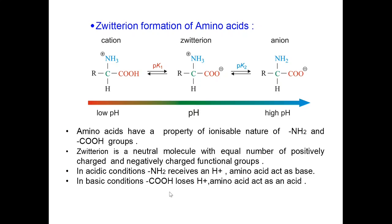In basic conditions, when high pH is there, the carboxyl loses hydrogen ion and it behaves as an acid and becomes an anion. This is how the amino acids behave in low and high pH solutions.